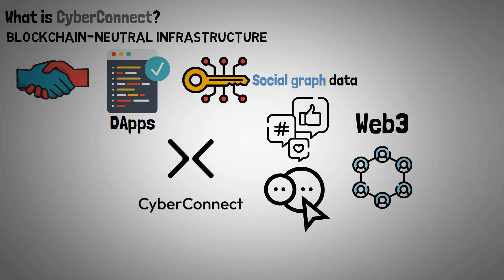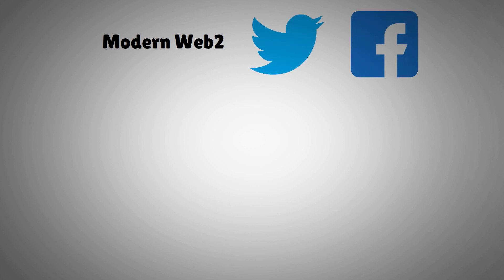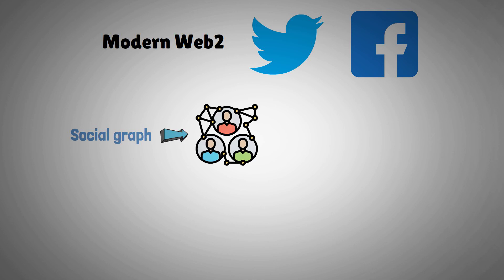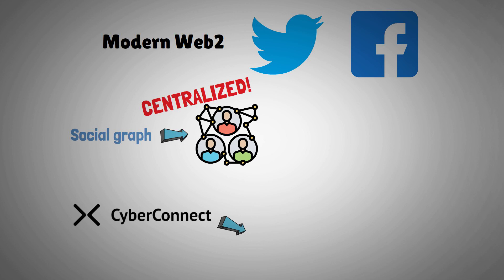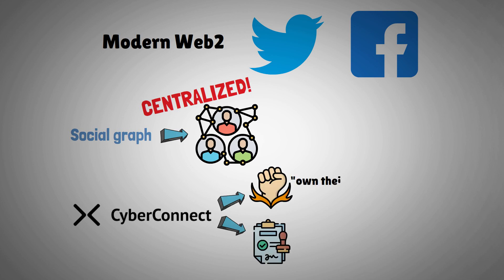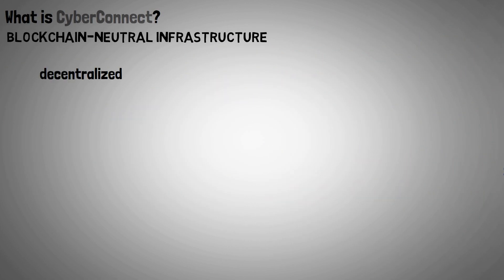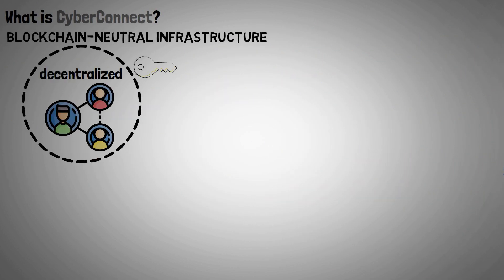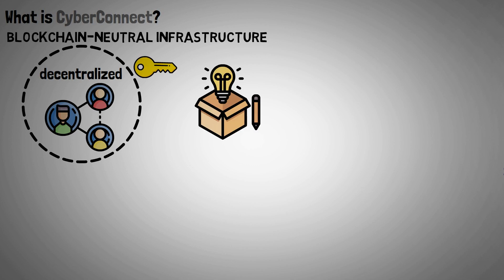In contrast to modern Web2 social media platforms like Twitter or Facebook that use social graphs to develop interconnections among users of social networks only in a centralized manner, CyberConnect is intended to be permissionless and capable of empowering content creators to own their digital roots and enable people to uncompromisingly own the connections between themselves and their communities. A decentralized social graph that users completely own emerged as a result of the development of CyberConnect.